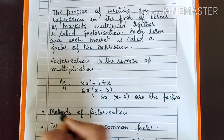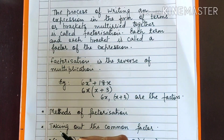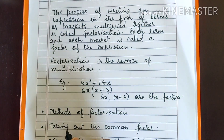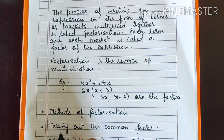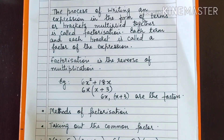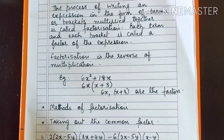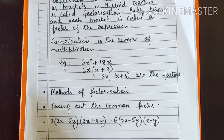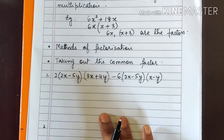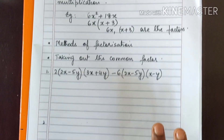Now, what are the different methods of factorization? The first one is taking out the common factor. Let's see how to do factorization by taking out the common factor.